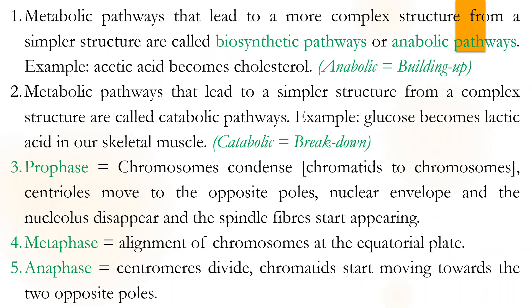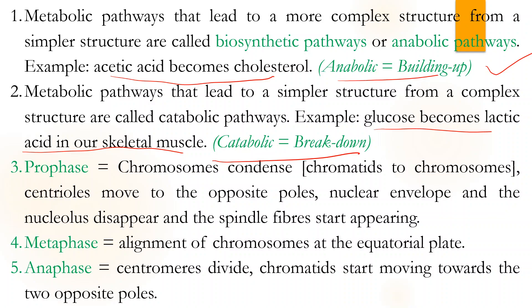Metabolic pathways are normally two types: anabolic and catabolic. In anabolic, simple molecules build up into complex molecules — for example, glucose formation. In catabolic, complex molecules break down into simple molecules — for example, glucose to lactic acid in skeletal muscle.